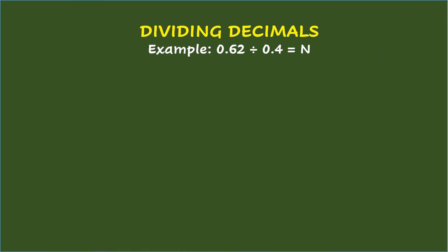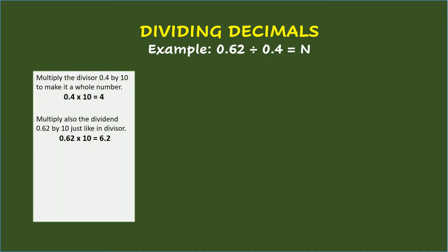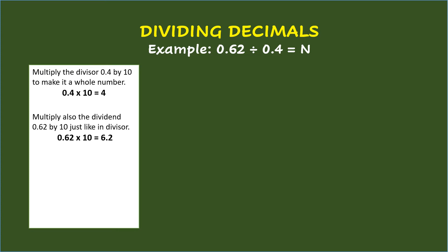Dividing decimals. Example: 0.62 divided by 0.4 equals n. When dividing decimals, the first thing to do is to multiply the divisor 0.4 by 10 to make it a whole number. So, 0.4 times 10 equals 4. Then multiply also the dividend 0.62 by 10, just like what you did with the divisor. So, 0.62 times 10 equals 6.2.